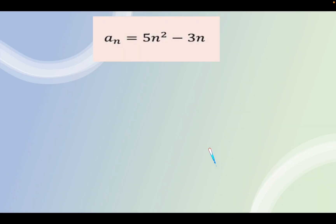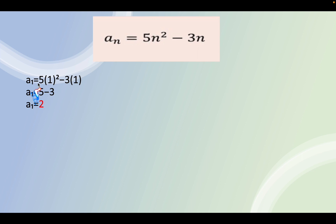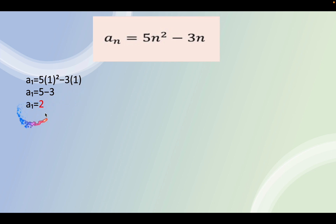Let's start with the first term. For the first term, I'm going to substitute n equals 1. So a sub 1 equals 5 times 1 squared minus 3 times 1. That gives us 5 times 1 which is 5, minus 3 times 1 which is 3. So the answer for the first term is 2.